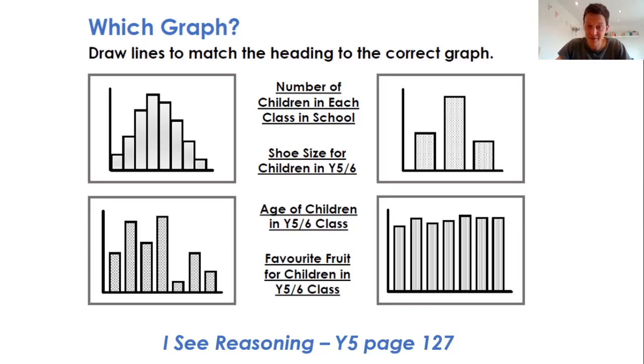So that will be the top left graph. The age for children in the year five and six class, children will either be nine, ten or eleven years old. So that actually must be only three bars top right, whereas favourite fruits will be more of a random distribution. That will be like the bottom left examples. Great opportunities for reasoning.